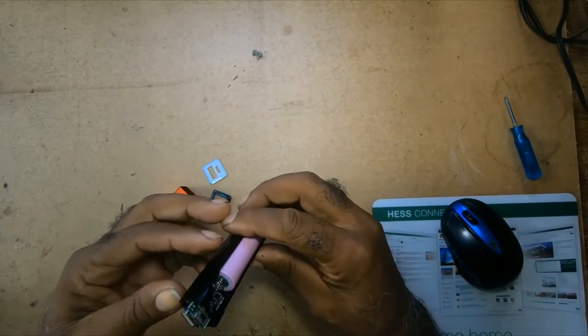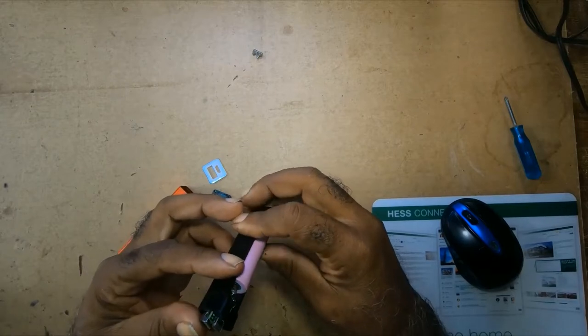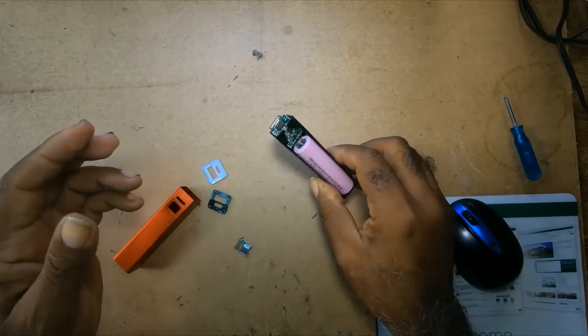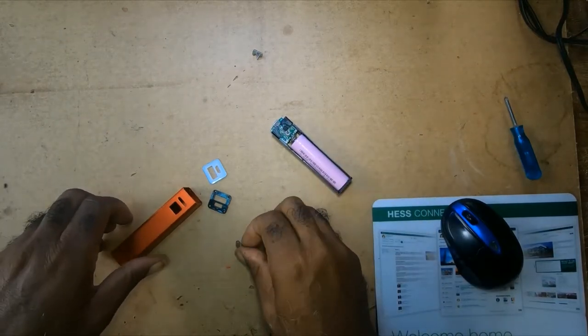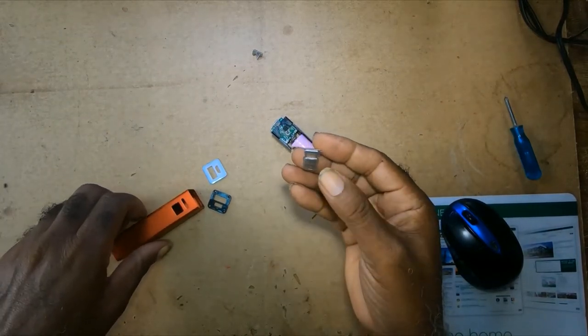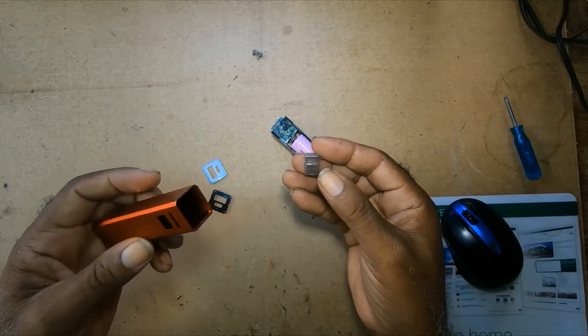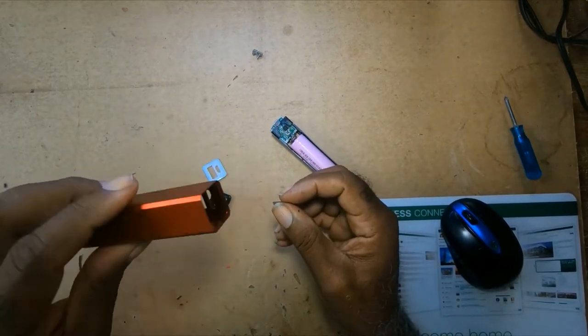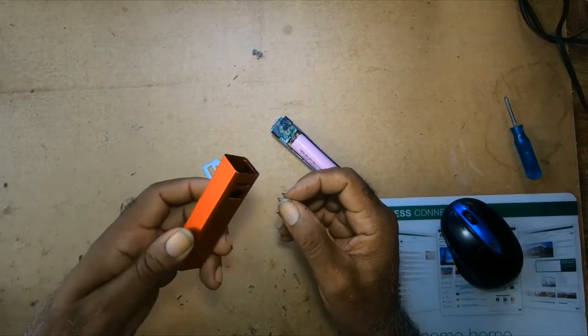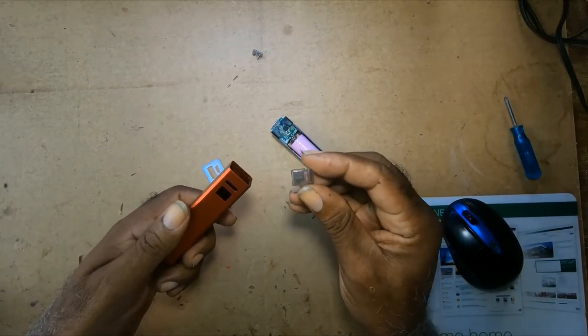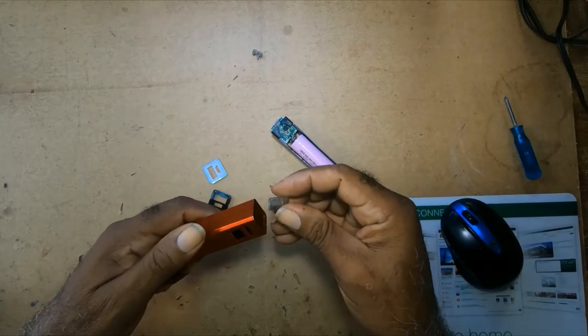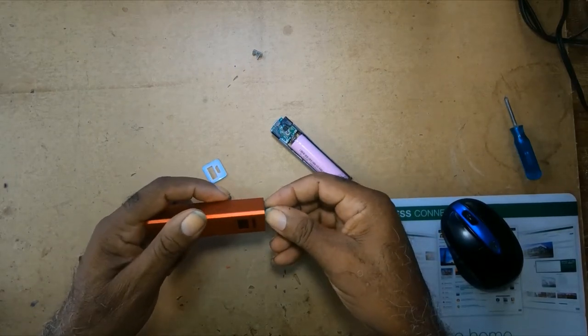Once you release it, it will bulge out because of the spring. So then you take the button end and the aluminum case. You turn the aluminum case down. If you put it up, that means this button will keep on falling, so you place the button in.